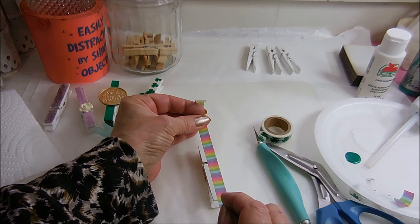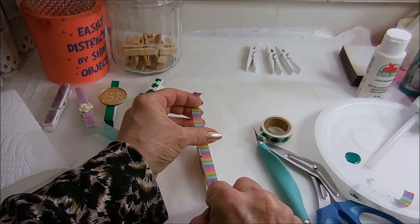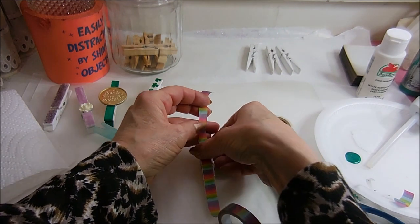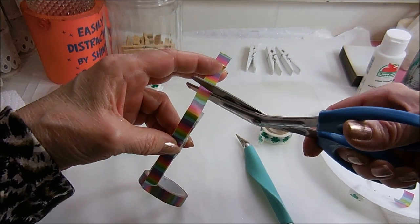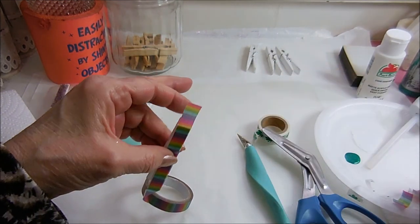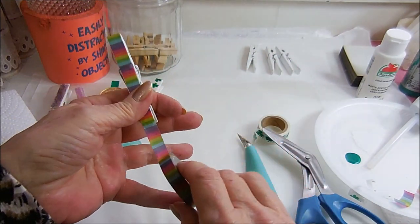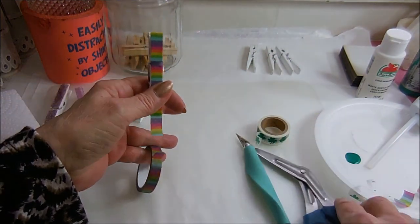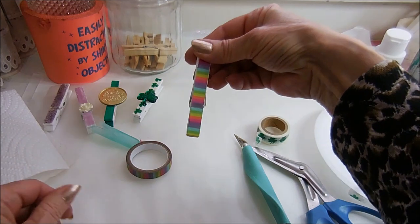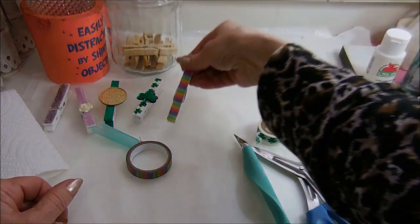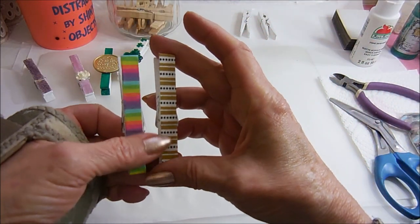This washi tape seems to be sticking a lot better than the shamrock. So I'm just going to press that on. And I'm going to cut this low enough to go down and wrap around. And I'm going to do the same thing on the other side. And I just think this is bright enough that the kids would really like it without having to add anything else on it. It's amazing how different they look just by changing up the washi tape.